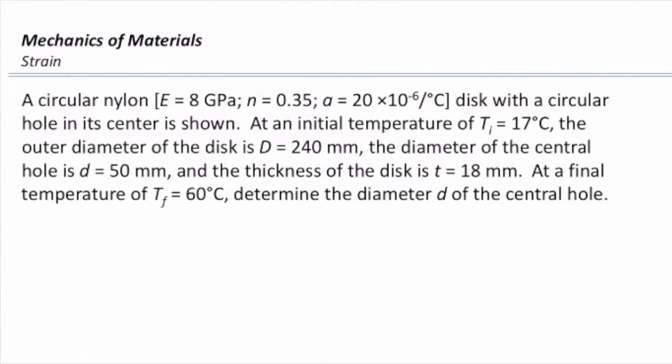At an initial temperature of Ti equal to 17 centigrade, the outer diameter of the disk is 240 millimeters, the diameter of the central hole is 50 millimeters, and the thickness of the disk is 18 millimeters.